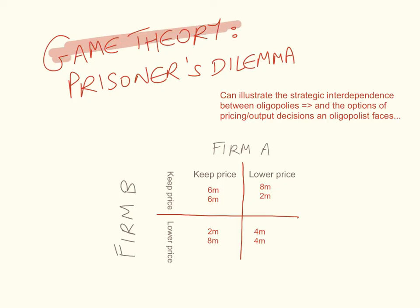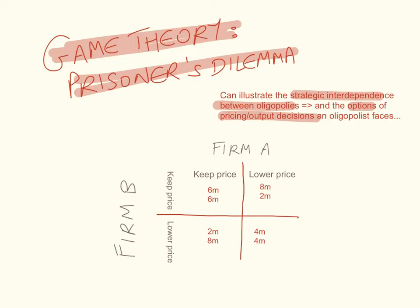Game theory becomes even more important in non-collusive oligopoly because all firms face the same prisoner's dilemma. This illustrates the strategic interdependence between oligopolies and the options they face in pricing and output decisions. Firm A has the option of keeping its price or lowering its price; Firm B faces the same options. If both firms lower their prices, profit would be $4 million each. If both keep their prices, profit would be $6 million each. If one lowers its price while the other keeps its price, the one that lowers makes $8 million while the other makes $2 million. The best case for each firm is to lower its price while the other keeps its price, but you can't guarantee the other firm will keep its price — this is where game theory is very important.